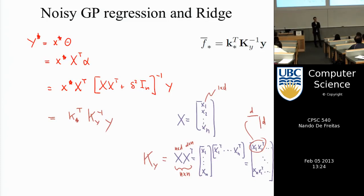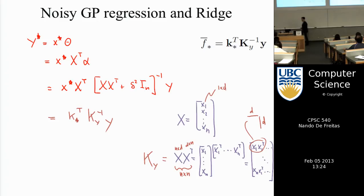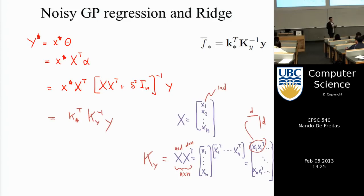There are many ways to arrive at Gaussian processes. I like the probabilistic approach because it's simple — if you know what a Gaussian distribution is, it's trivial to apply one theorem to get predictions. Another way: if you take a one-hidden-layer neural network and let the number of neurons go to infinity, you can show that leads to a Gaussian process as well. David MacKay at Cambridge has a nice tutorial showing this non-rigorously but intuitively.